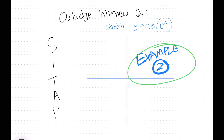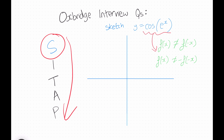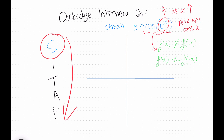Let's work through another example: sketch y equals cos(e to the x). Starting with S for symmetry, a quick check shows the function is not odd nor even. Looking at the period, the term inside the cos function increases as x increases, so the period is not constant.